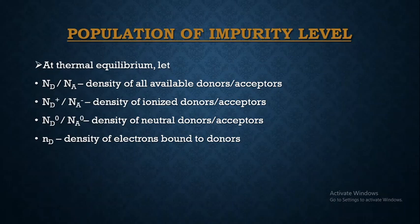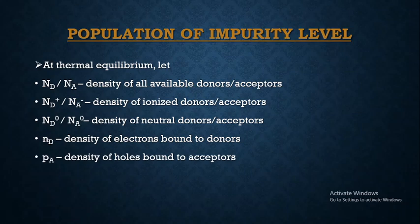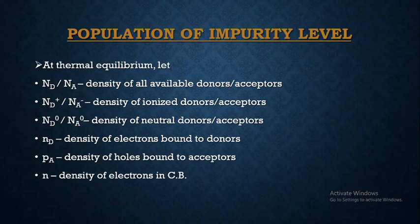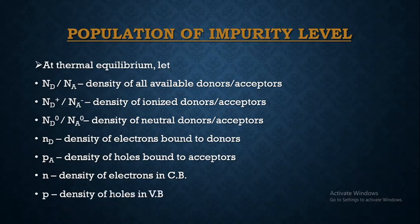Let n_d be the density of electrons bound to the donors — which is the population of the donor level — and p_a be the density of holes bound to the acceptors, that is the population of the acceptor level. We need to find what n_d and p_a are. Also, let n be the density of electrons in the conduction band and p represent the density of holes in the valence band.